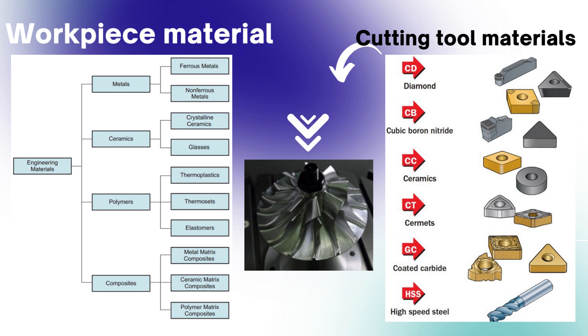As seen in the image, the cutting tool materials are produced from six different materials: diamond, cubic boron nitride, ceramic, cermet, carbide, and high-speed steel.